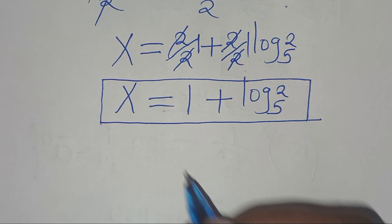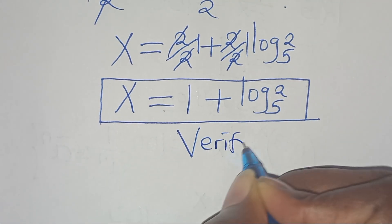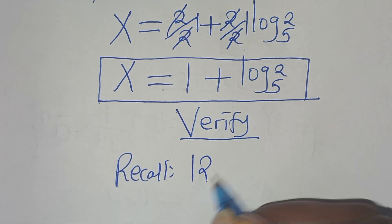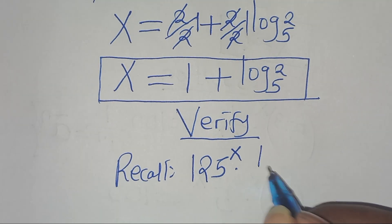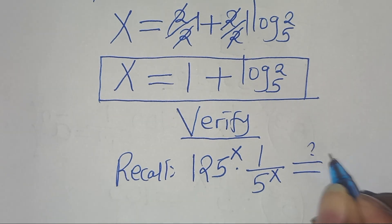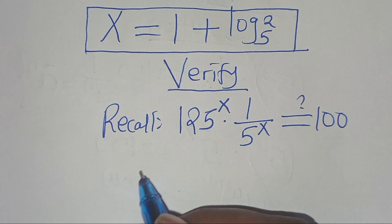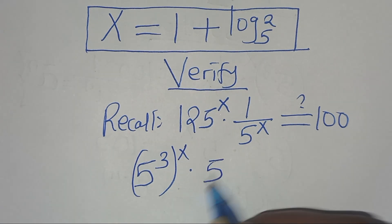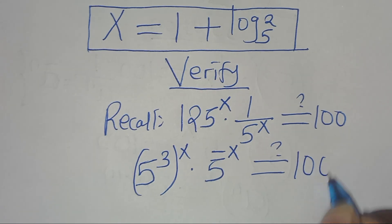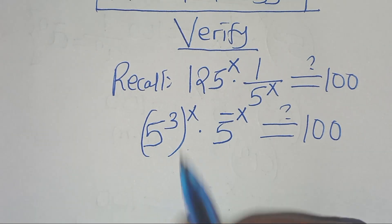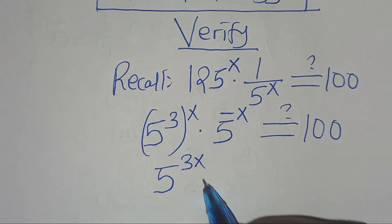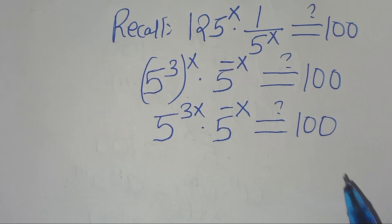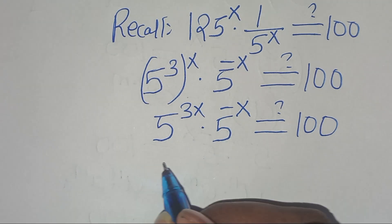Now let's verify that this value of x satisfies the equation. Recall: 125^x times 1 over 5^x should equal 100. Expressing 125 as 5³: (5³)^x times 5^(-x) should equal 100. Applying the power-of-power rule, 5^(3x) times 5^(-x) should equal 100. Using the product of powers rule: 5^(3x + (-x)) equals 5^(2x) should equal 100.